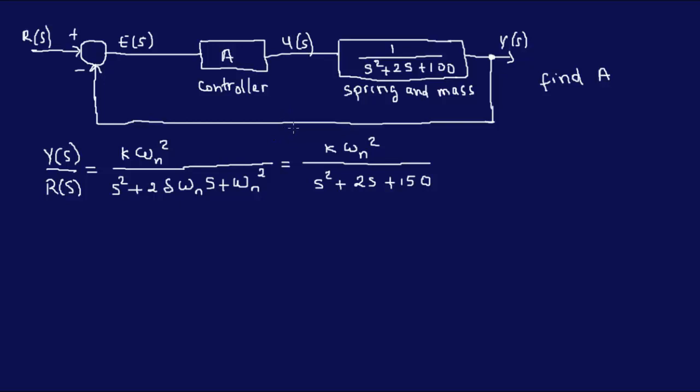So the question here is to find the value of A that will result in the second order closed loop system given here. So in a typical exam, the multiple choice answers are 0, 25, 50 or 100.